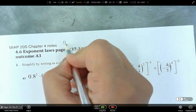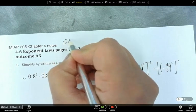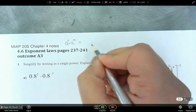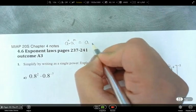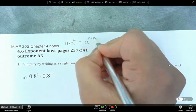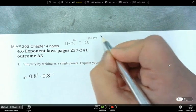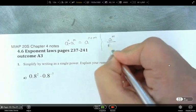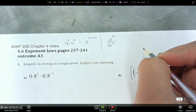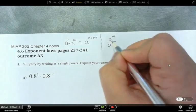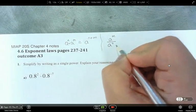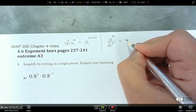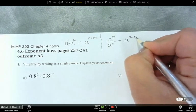So if I have the same base and they've got different exponents, how do I combine them? Since they have the same base, I can add the exponents together. Now, what if I have the same base and they're dividing — so A to the power of M dividing by A to the power of N? What do we do to the exponents? We subtract them: A to the power of M minus N.